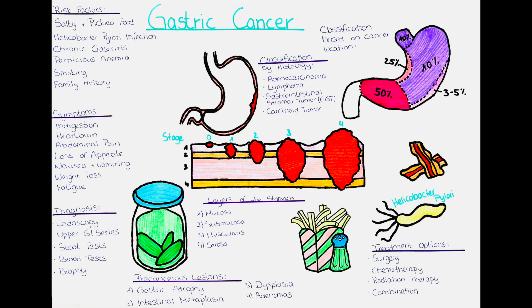In stage 4, the cancer has spread to distant organs or tissues such as the liver, lungs or bones. The tumor may be any size and may or may not have spread to nearby lymph nodes. Within each stage there may be subcategories that further describe the extent of the cancer. The TNM system is used in combination with other factors, such as the patient's age and overall health, to determine the best treatment plan and predict the prognosis for gastric cancer.